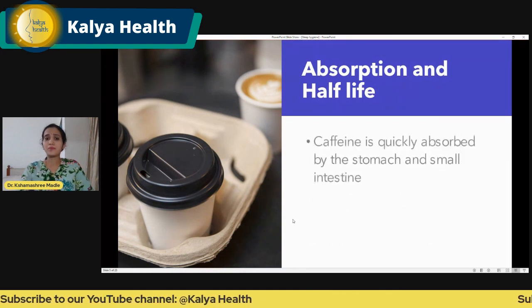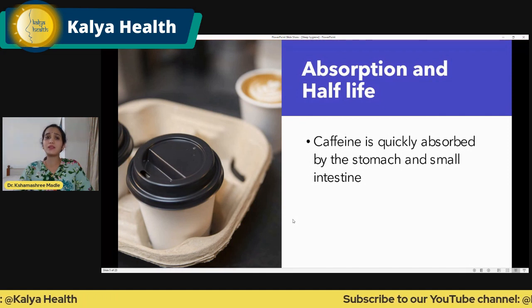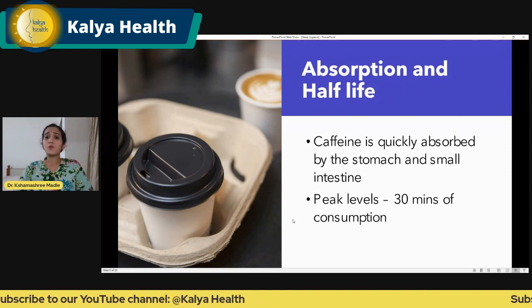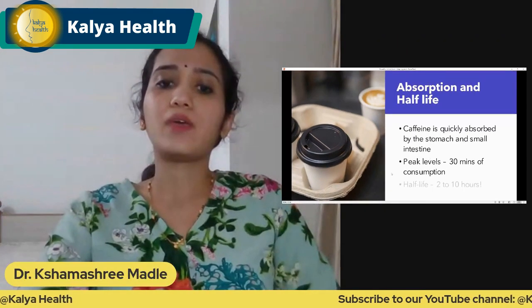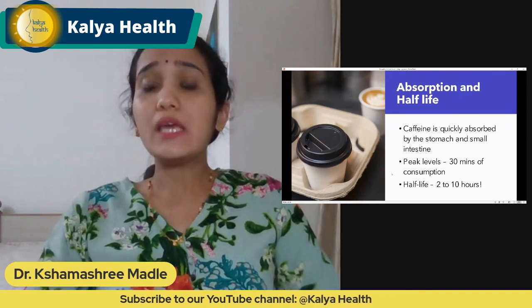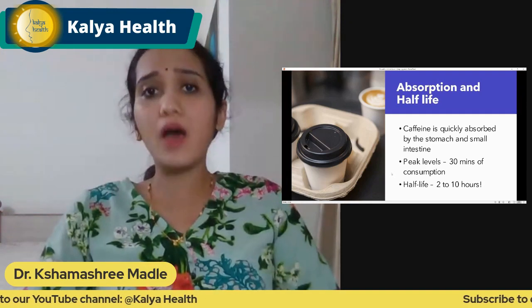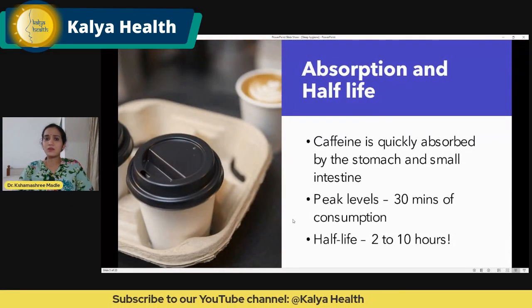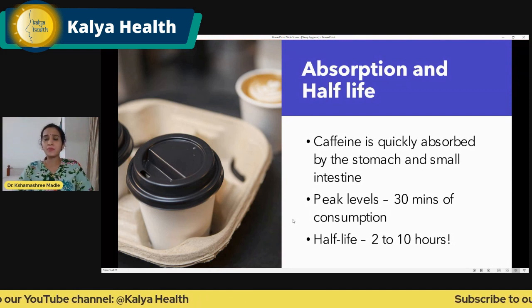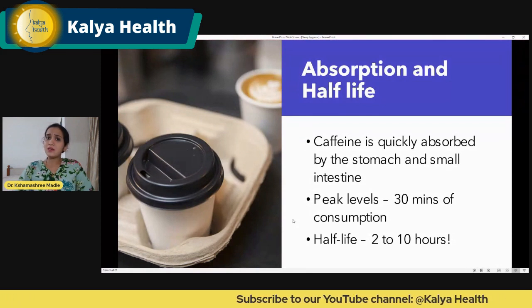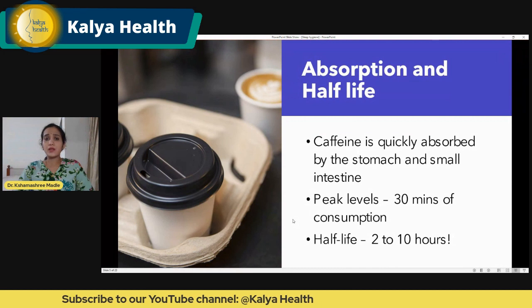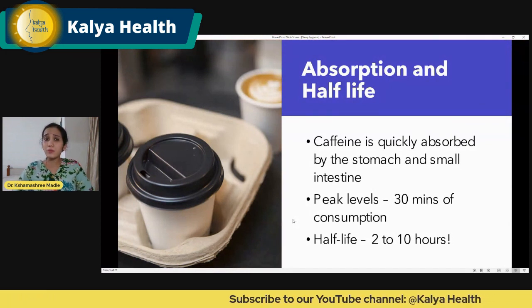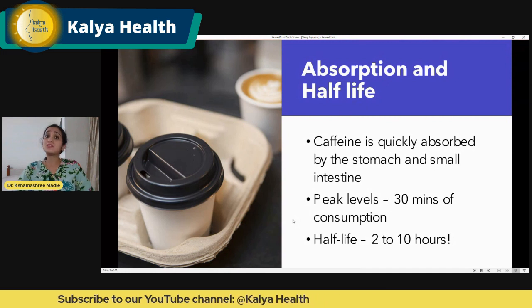Talking about the absorption of caffeine: it is quickly absorbed by the stomach and the small intestine — so quickly that peak levels of caffeine in the blood are reached within 30 minutes of consumption. The half-life, that is the time taken for the initial amount of caffeine in the body to reduce to half, varies anywhere between 2 to 10 hours. On average the half-life is about four to five hours, so if you drink coffee at around 5 or 6 o'clock in the evening, you would still have half the amount of caffeine circulating in your blood even at 10 pm at night.